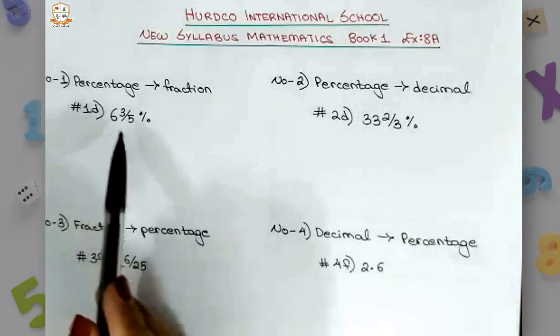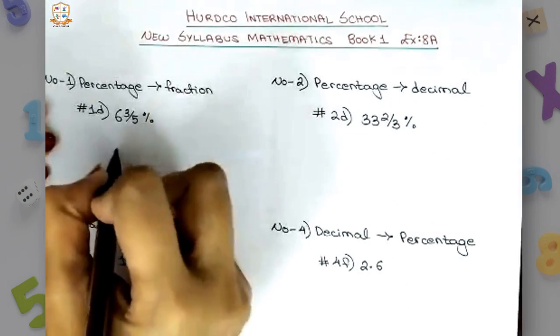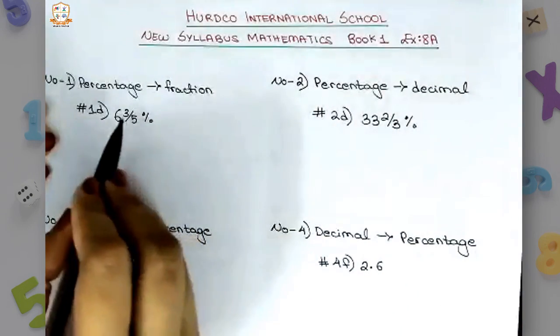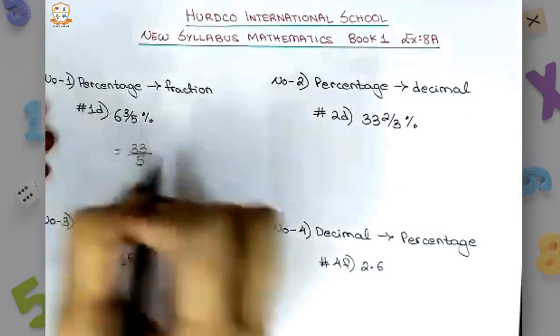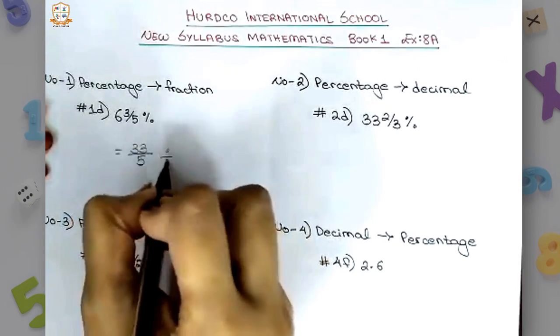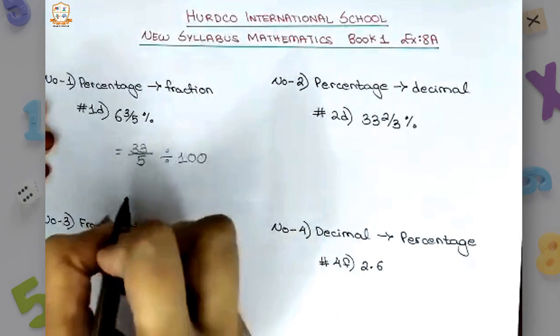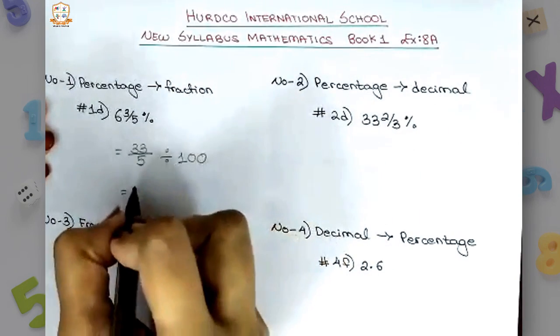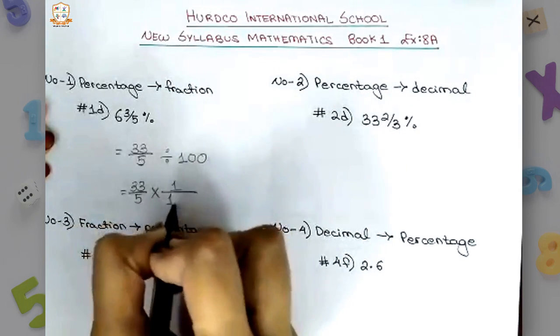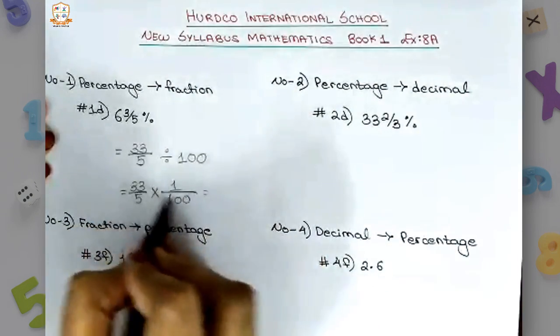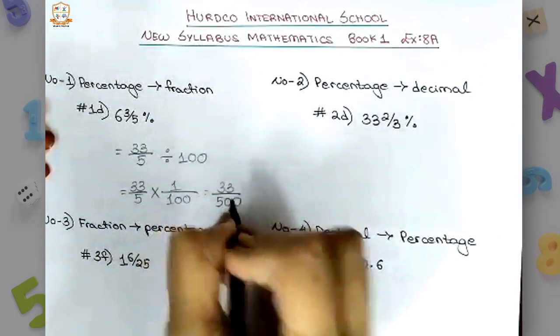Number 1d is 6 whole 3 by 5 percent. Now if you convert this percentage into fraction, we will first convert the mixed number into a fraction. So this will become 33 by 5, then 33 by 5 divided by 100. When we turn this division sign into multiplication sign, this number will become reciprocal, so it will become 33 by 5 into 1 by 100, which gives us 33 by 500.